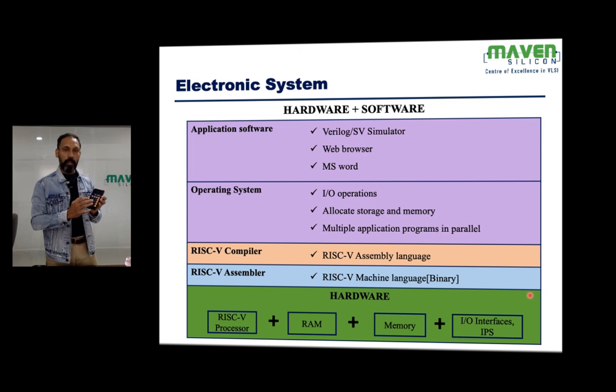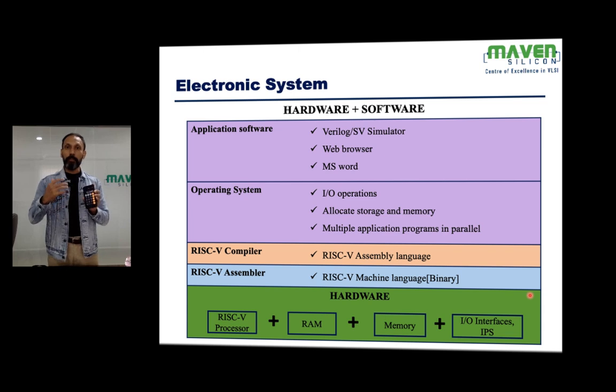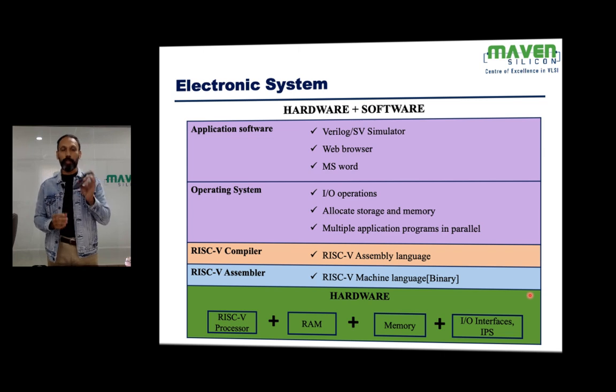Every processor — ARM core, RISC-V, or x86 — has a special register called the program counter. The starting address is loaded into the program counter, which increments sequentially. That's how the processor fetches all instructions from RAM and executes them. On the calculator, you can do addition, subtraction, and multiplication — but everything is converted into processor instructions like add, multiply, subtract, or divide. That's how the processor calculates and returns results.